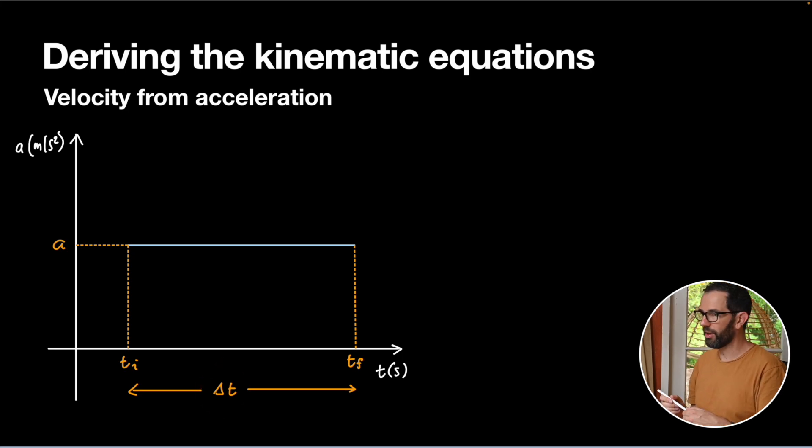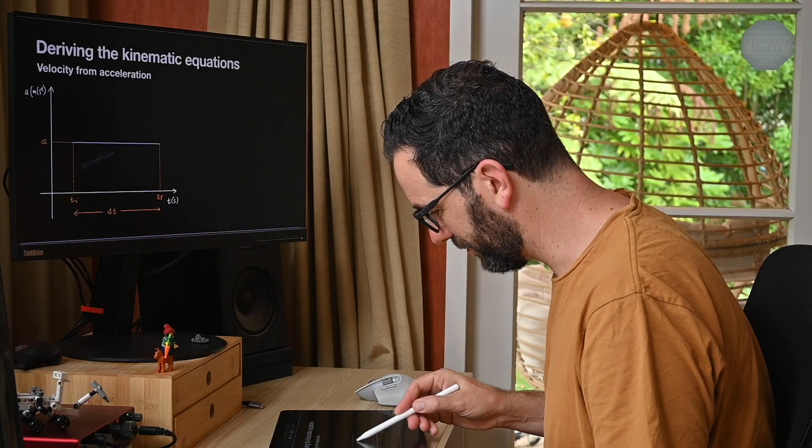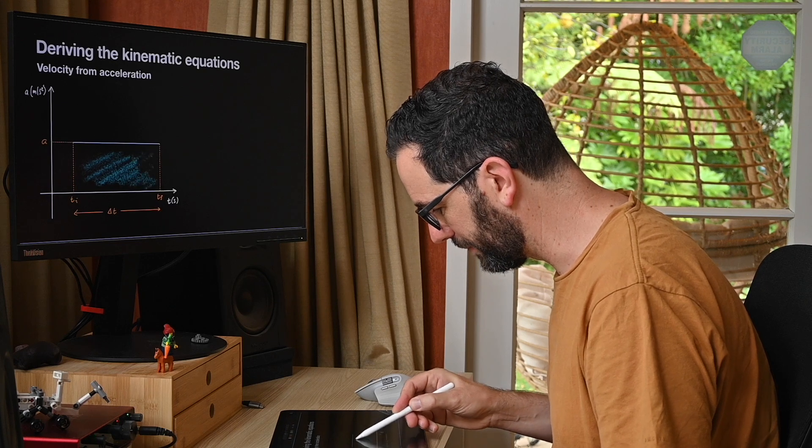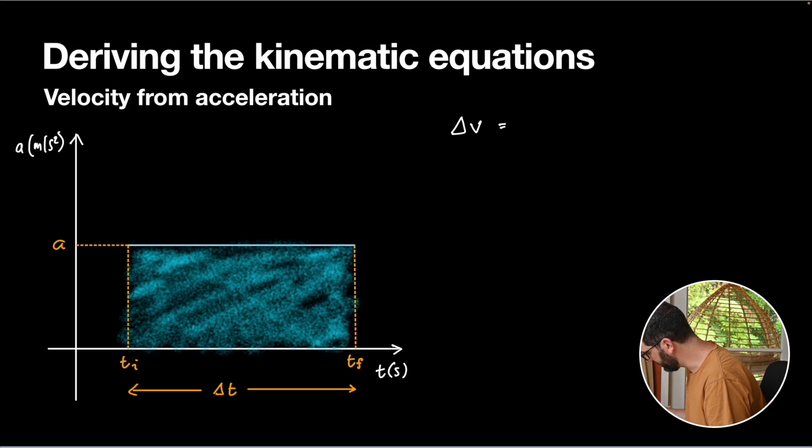Now in much the same way that we used area under a velocity-time graph to get displacement, we can get our change in velocity by calculating the signed area underneath an acceleration-time graph. This is probably the only time we're actually going to do that. So if we want to find the change in velocity, it'll just be this area here. So if we write down what that area is, what we'll get is that our change in velocity is going to be equal to our acceleration, the height of our rectangle, times Δt.